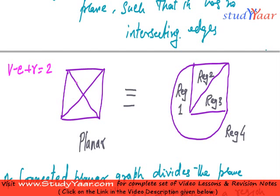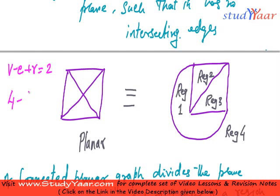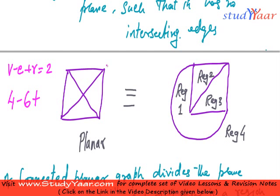In this graph, how many vertices do I have? 1, 2, 3 and 4 — so 4 vertices. Minus how many edges? 1, 2, 3, 4, 5, 6 — so 6 edges. Plus the number of regions: region 1, region 2, region 3, and the infinite region which is the 4th region — so 4 regions. What do I get? 4 minus 6 is minus 2, plus 4, which is equal to 2.